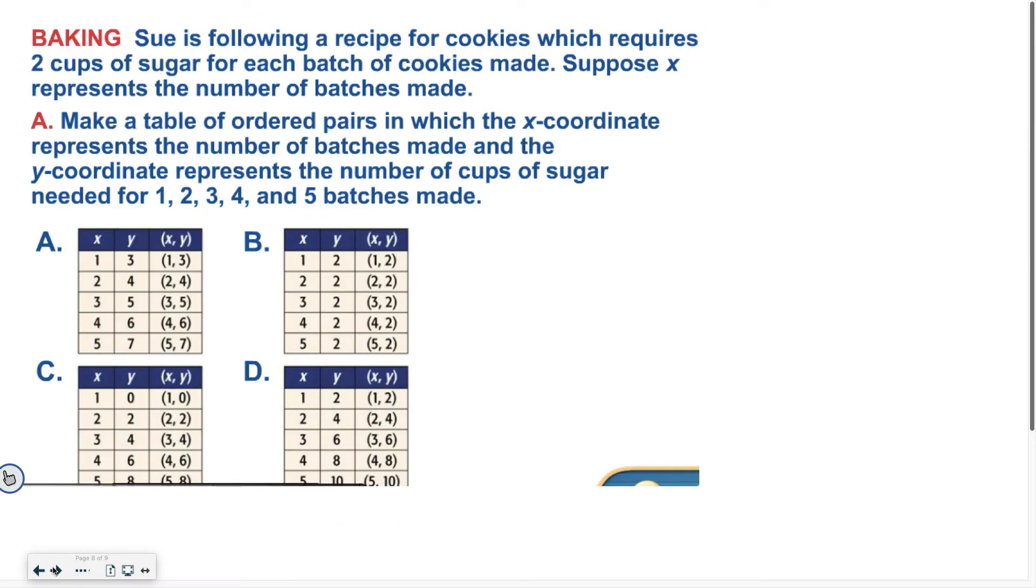All right. So now to your turn. I want you to practice making a table for this question. Sue is following a recipe for cookies, which requires two cups of sugar for each batch of cookies made. Suppose x represents the number of batches made. Make a table of ordered pairs in which the x-coordinate represents the number of batches made, and the y-coordinate represents the cups of sugar needed for 1, 2, 3, 4, and 5 batches made. Good luck.